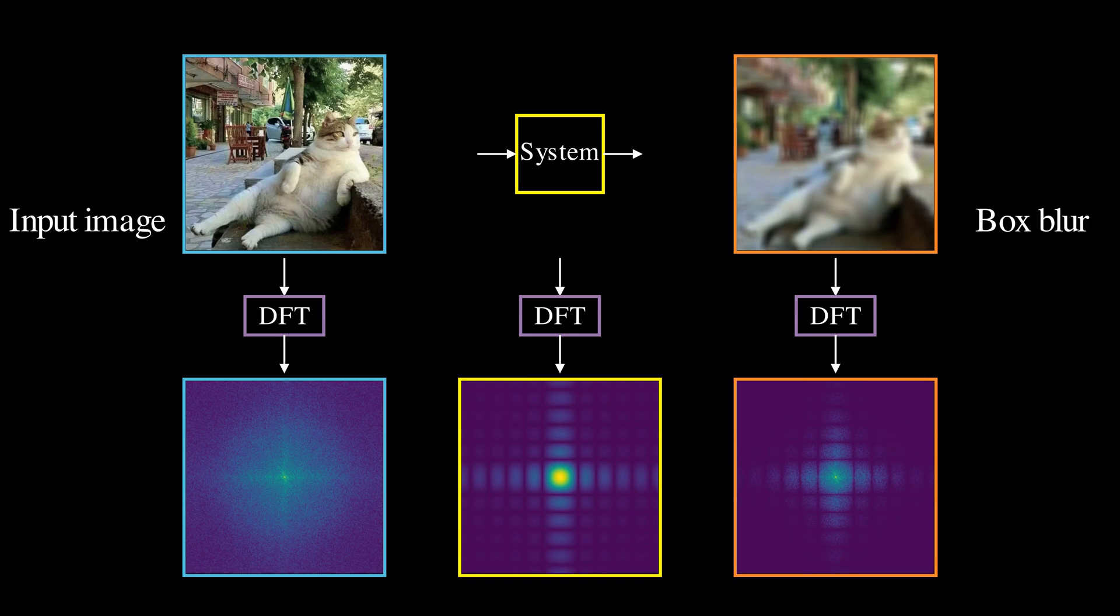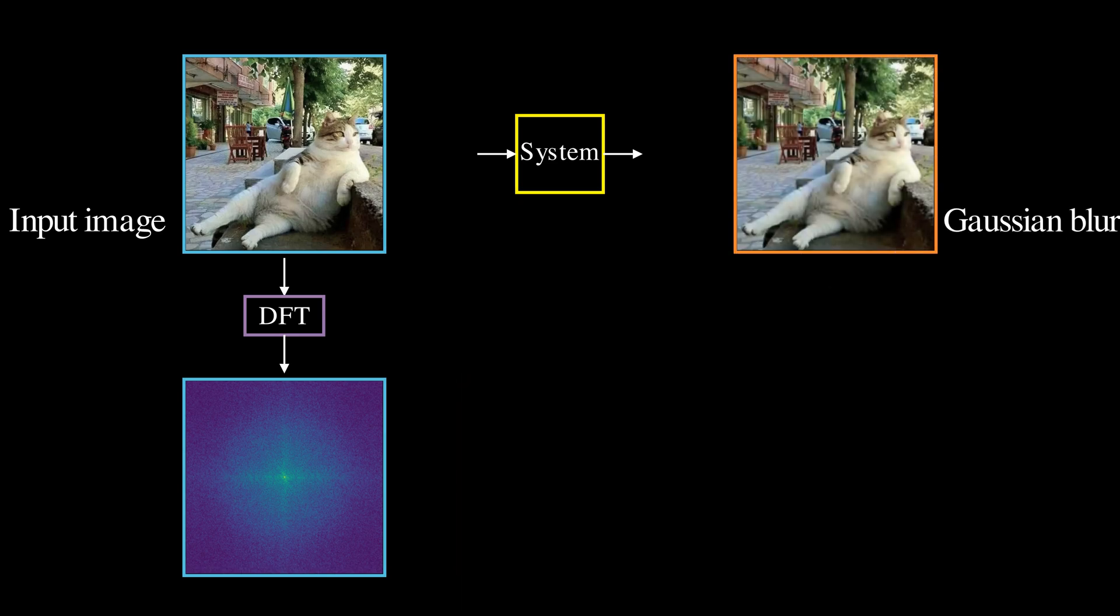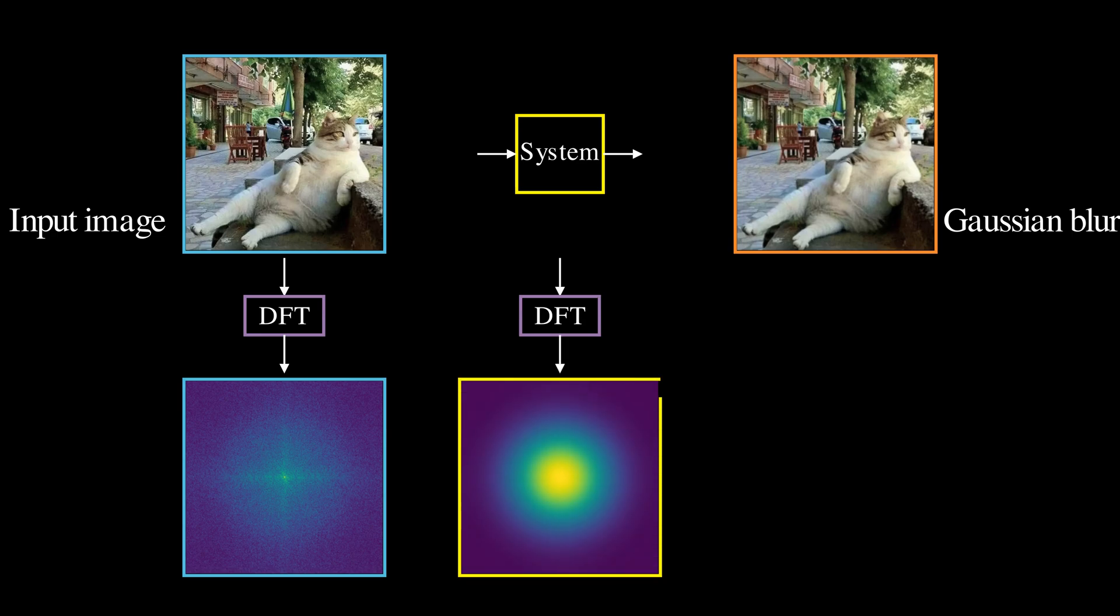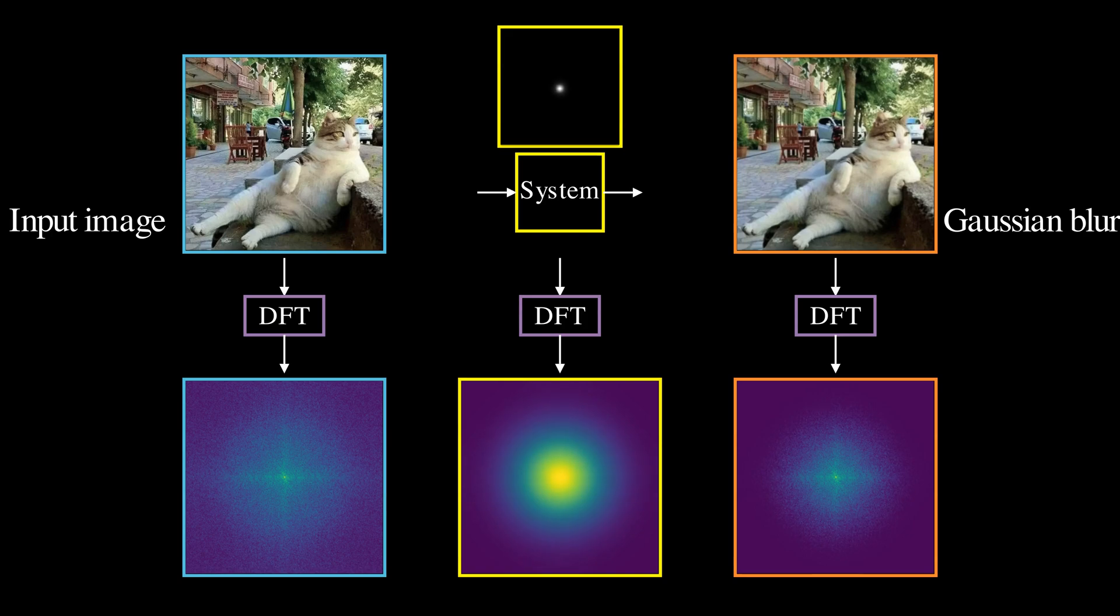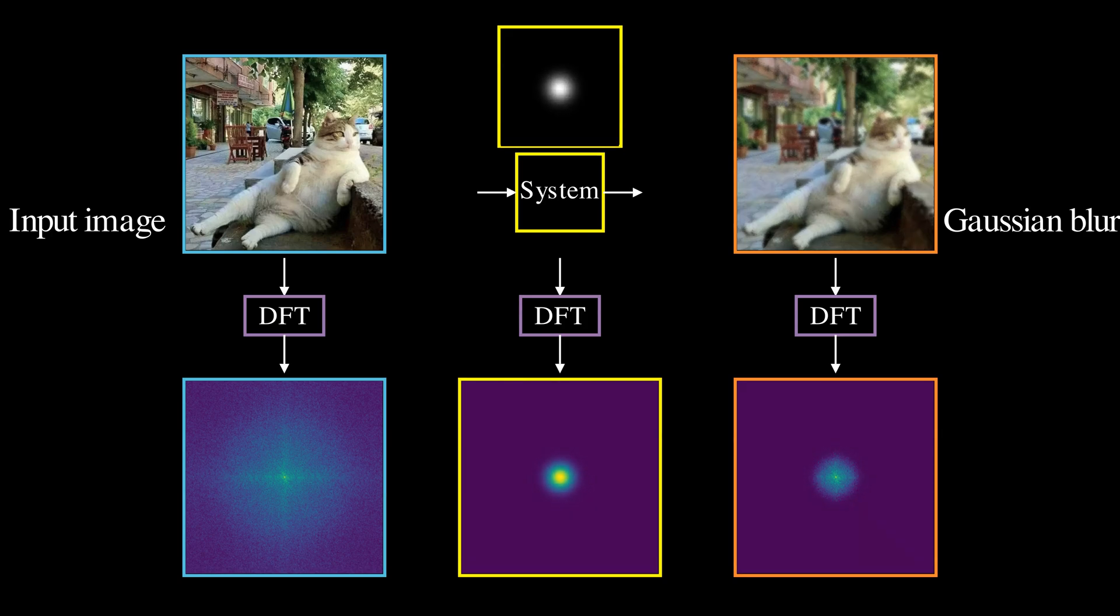Now let's look at Gaussian blur. The DFT of a Gaussian kernel is also a Gaussian in the Fourier domain. This creates a smooth low-pass filter that effectively removes high-frequency components from the input image. When we increase the standard deviation of the Gaussian kernel, it removes even more frequency components, resulting in a more blurry image.